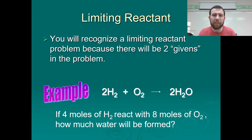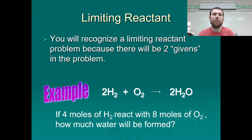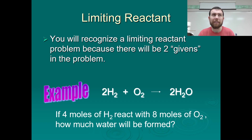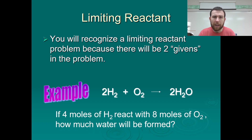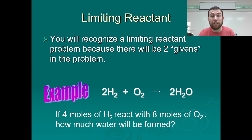When you're given a limiting reactant problem, the single most defining characteristic is that you're going to be given two givens — two pieces of quantitative information about the substances that are reacting. Typically you're only given one piece of information, but in limiting reactant problems you have two givens.